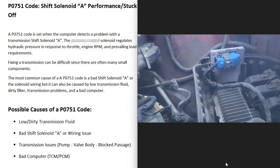The last possible cause is a bad computer — a bad transmission control module or powertrain control module. This is fairly rare, but it does happen. If you think you have a bad computer, be sure to check that the battery is good, the alternator is charging correctly, and that the computer module has a good ground, because all computer modules need a stable power supply. Usually with a P0751 code it's going to be something else, but a computer issue is possible.